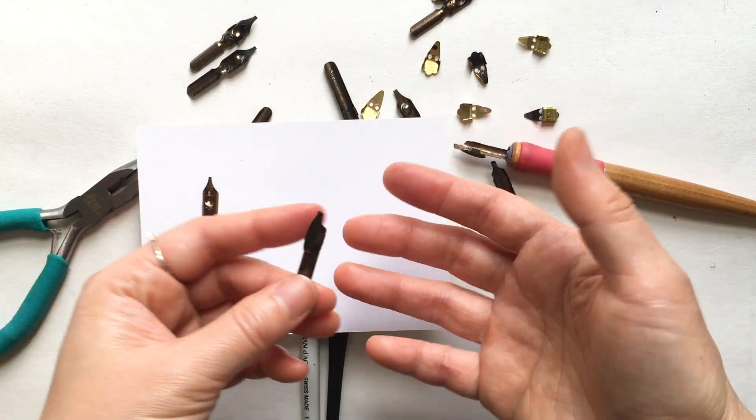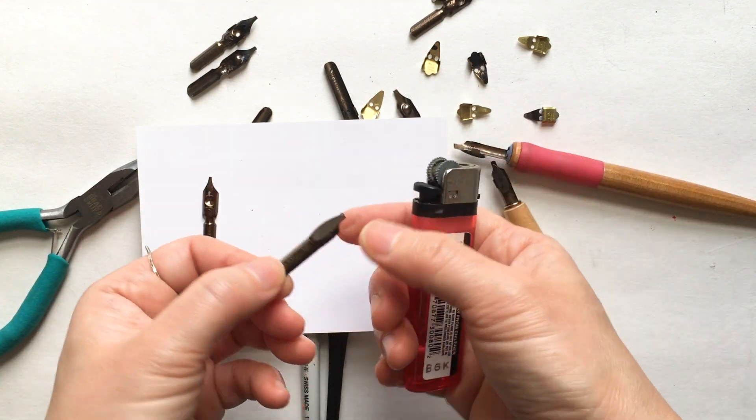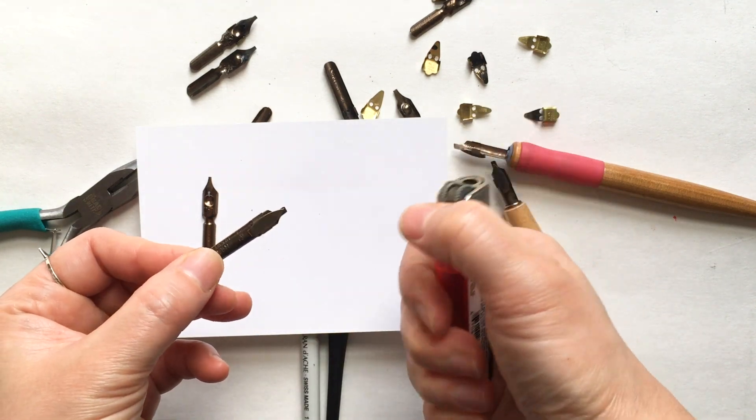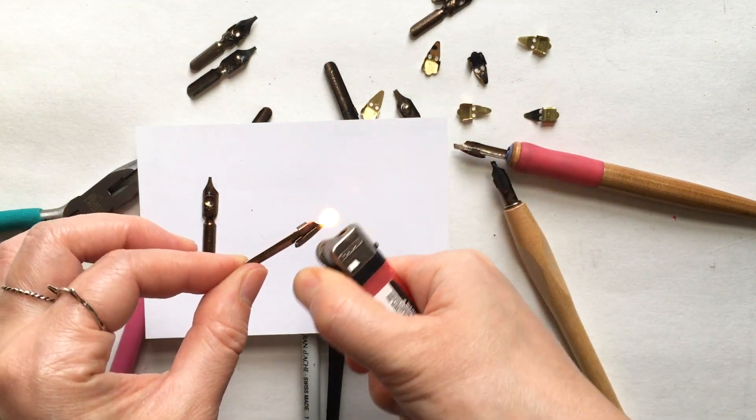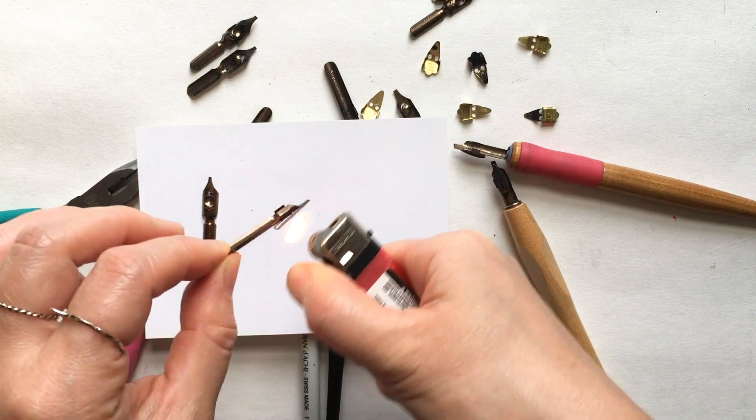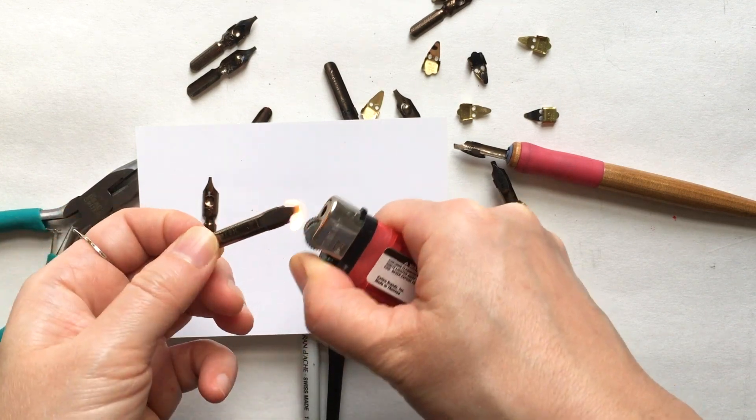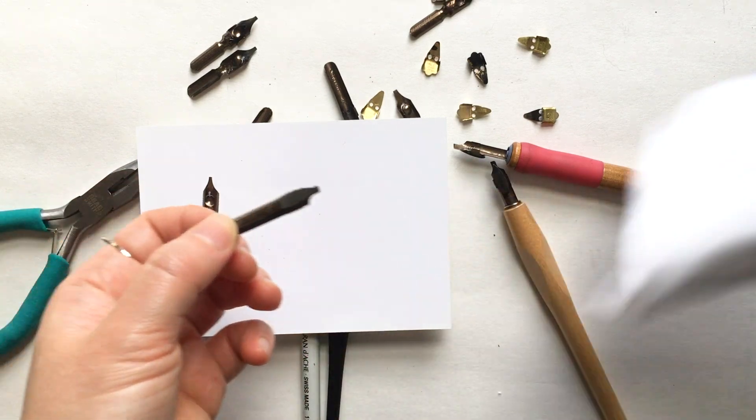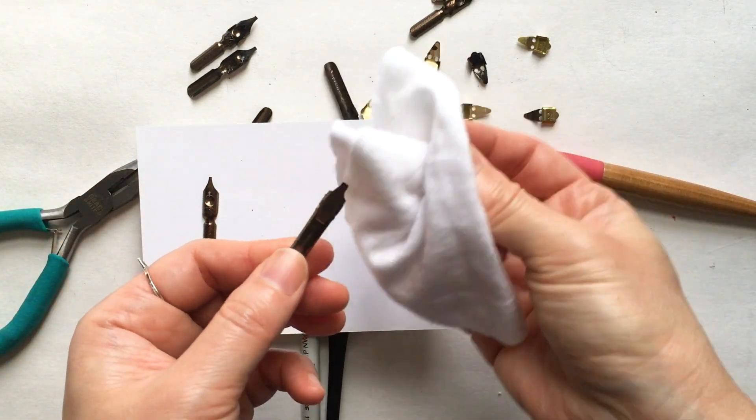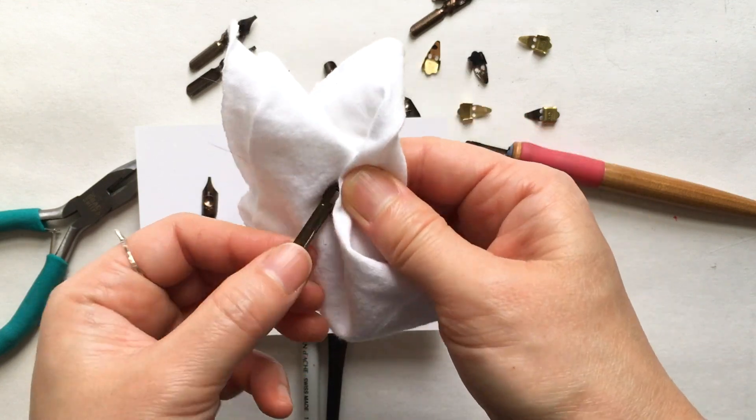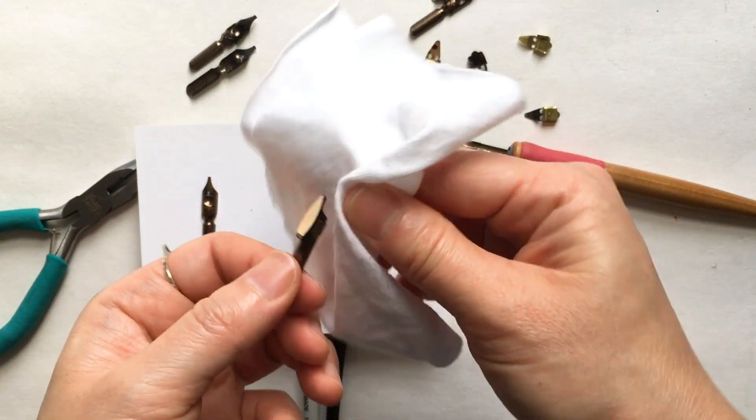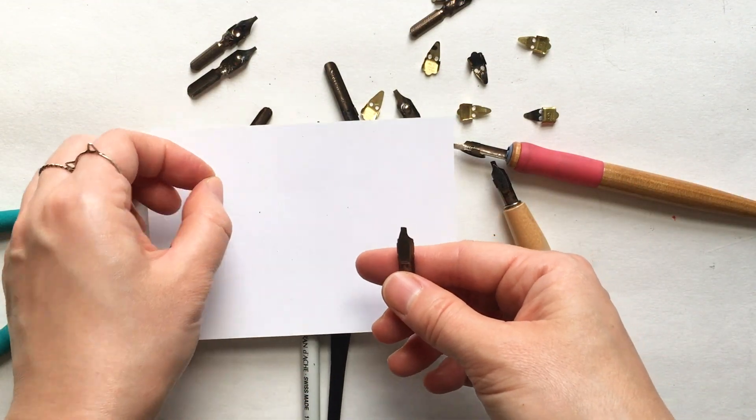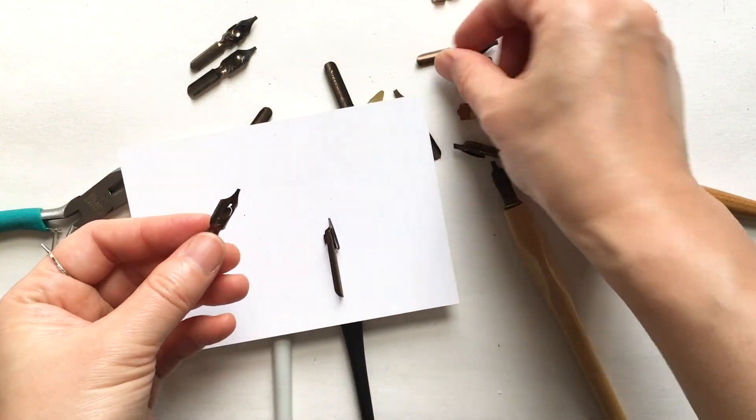Secondly, if you can burn your nib a little bit very quickly, just three to five seconds: one, two, three, four, five. Just make sure you do it both the back and the front, and then just wipe it off. Wipe off any of the whatever thing that you burn, and that should be it. So the same thing with the Mitchell nib as well.